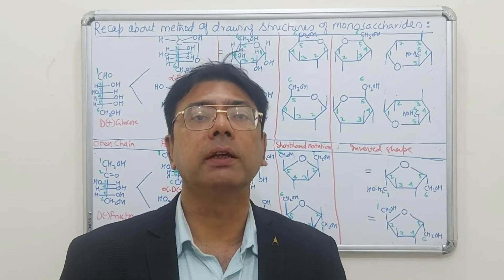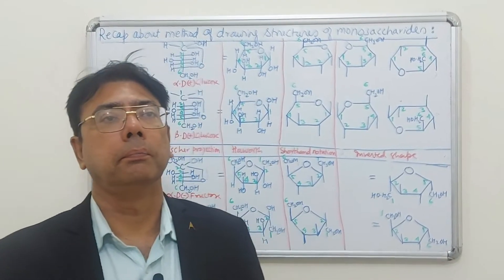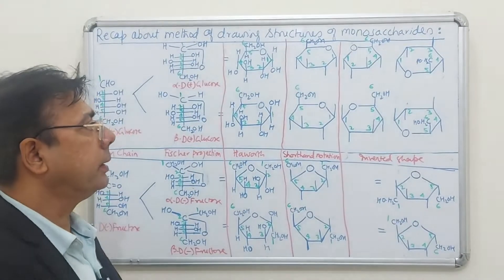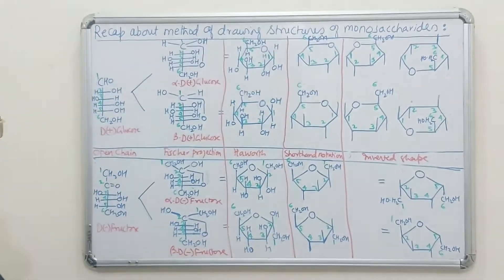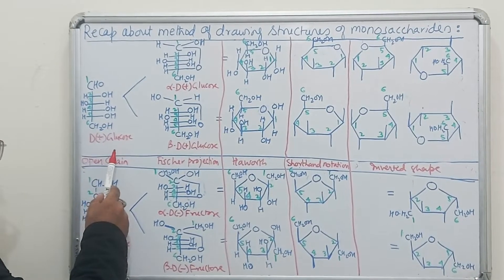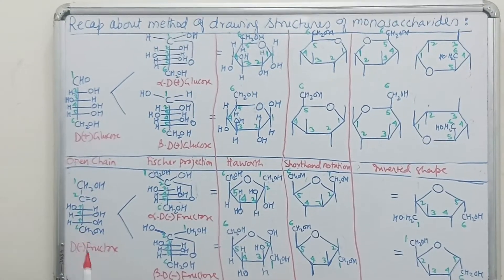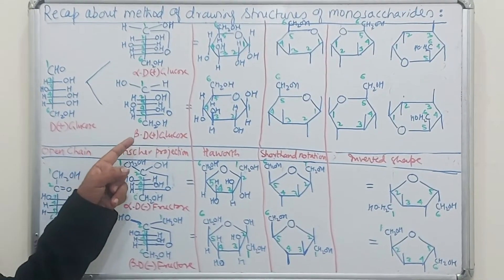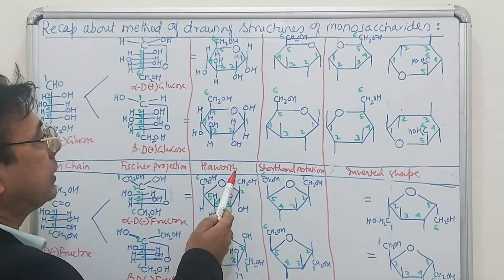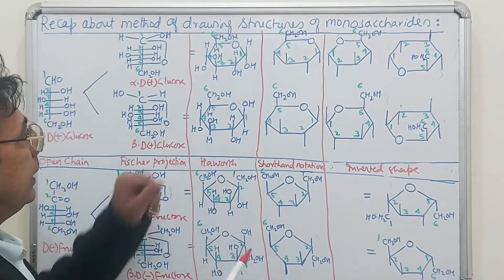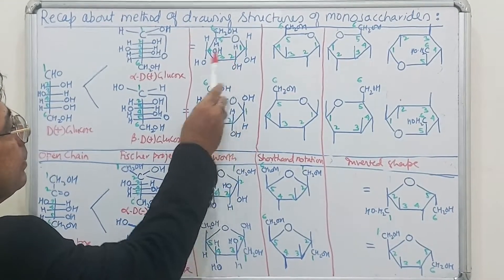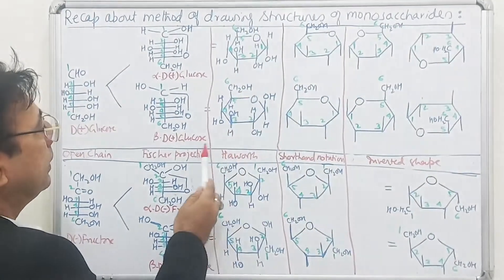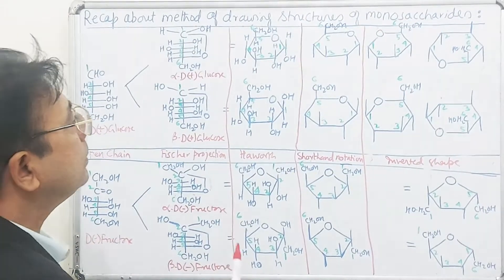Before describing oligosaccharides in detail, let me give a quick recap of the rules for drawing monosaccharide structures. Here we have D-glucose in open chain structure. When we form a closed structure it forms either alpha-D-glucose or beta-D-glucose, which folds into Haworth form. This is how the numbering of the ring is done for alpha-D-glucose and beta-D-glucose.